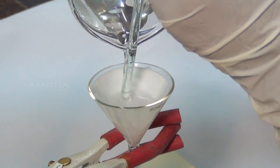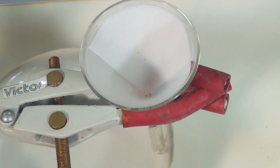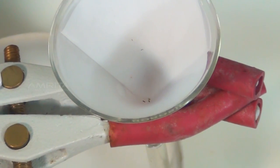Pour the solution into the funnel over the glass rod and collect the filtrate in the china dish. The insoluble impurities are left on the filter paper.